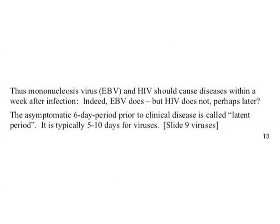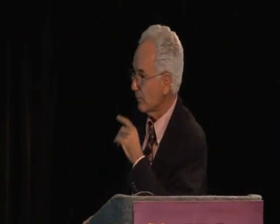Except HIV — it doesn't seem to do it that fast. It waits about 5 or 10 years. But flu, herpes, Epstein-Barr virus, Rous sarcoma virus causing a tumor in the mouth, or other retroviruses causing spleen weight increases — all of them work like conventional viruses. Only HIV seems to like to wait a lot of time.